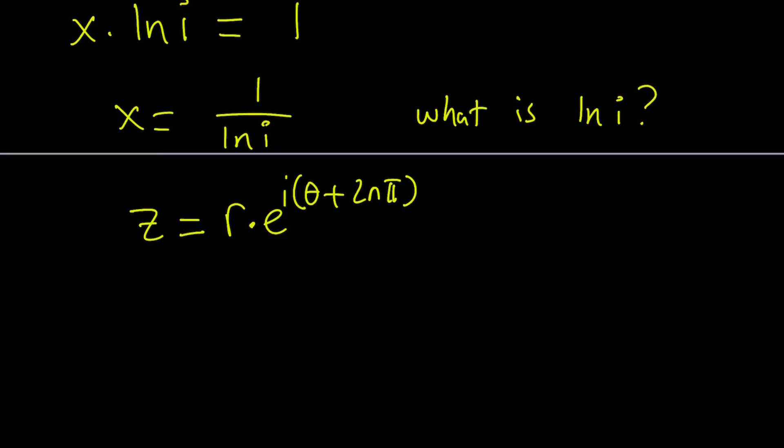So n equals 0 is going to give you the principal value, by the way, that's what it's called, or the principal branch, or the principal branch is going to actually give you the principal value. So that's going to be kind of like a simplification of the problem, but that's the general solution.